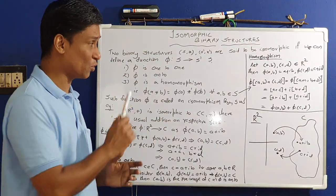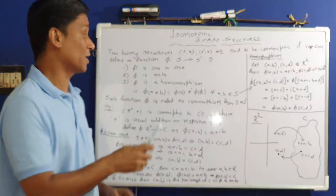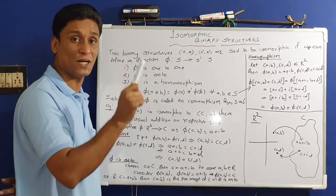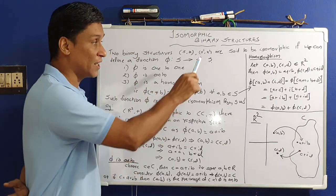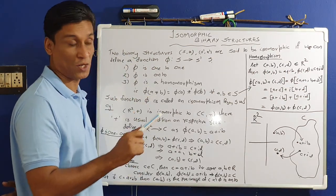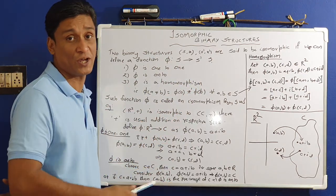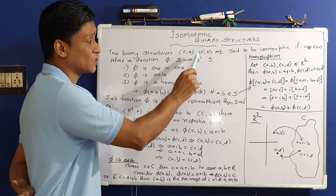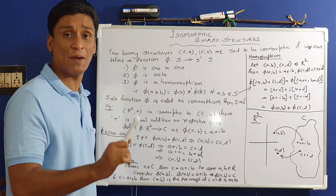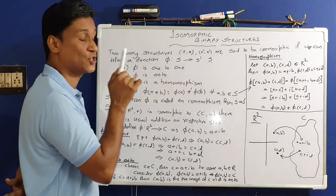The concept of binary structures has isomorphic structures and we will use these two concepts. We have a definition to write. There are two binary structures: (S, *) and (S', *'). S with star, S' with star-dash — these are binary operations. If we know these binary structures, we will define the structure. S star, S' dash is isomorphic.